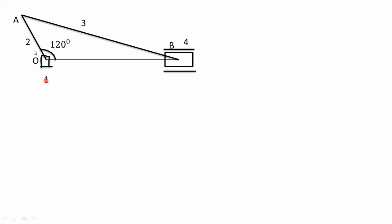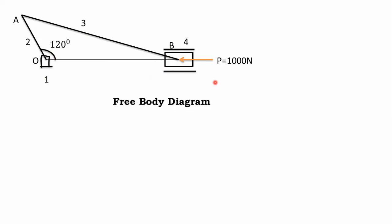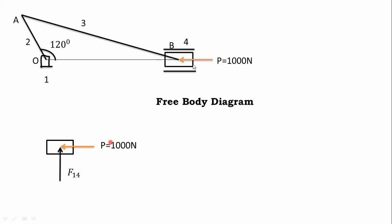Links are: link one is fixed, link two is crank, link three is connecting rod, link four is piston. The piston is applied with a 1000 Newton force. So the slider crank mechanism construction is complete. Now we need to go to the free body diagram. First construct the slider, link four, and show the forces on it. One force is the applied force, then this slider also has a force coming from the fixed end.